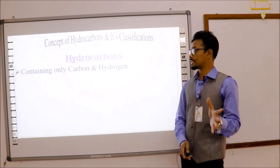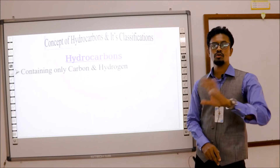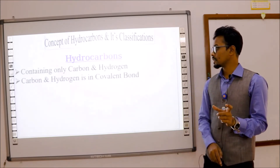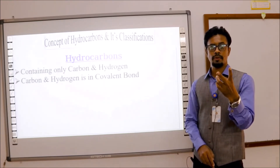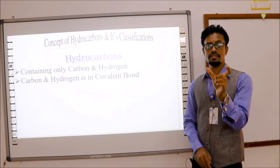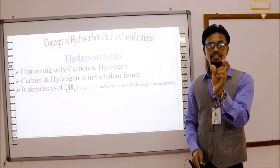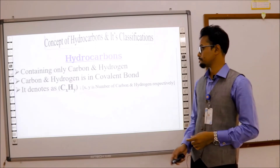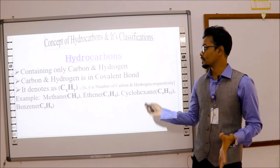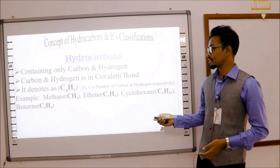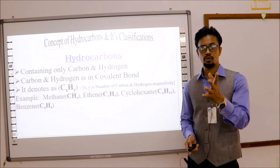Here are hydrocarbons in detail. Hydrocarbons contain only two elements: carbon and hydrogen — there are no other elements. Carbon and hydrogen are in a covalent bond. You know three types of bonds from Class 9: ionic, covalent, and metallic bond — here you will see only covalent bond. The general formula is CₓHᵧ, where X is the number of carbons and Y is the number of hydrogens. Examples include methane, ethane, cyclohexane, and benzene — all containing only carbon and hydrogen.